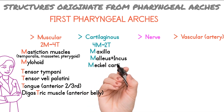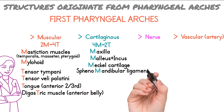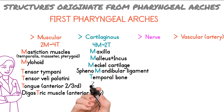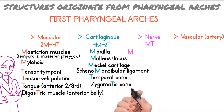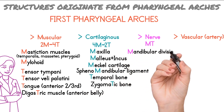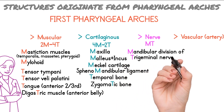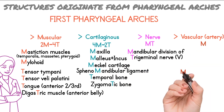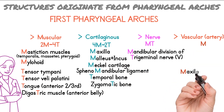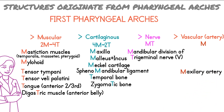The cartilaginous component of the first arch has the mnemonic '4M2T.' From M, there is the maxillary bone, malleus, and incus bones from Meckel's cartilage, sphenomandibular ligament, squamous part of temporal bone, and zygomatic bone of the face. The nerve associated with the first pharyngeal arch is the mandibular division of the trigeminal nerve. The vascular component: arterial supply of the first pharyngeal arch is derived from the maxillary artery, which is a terminal branch of the external carotid artery.